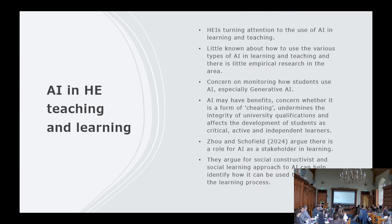HEIs are turning their attention to the use of AI in learning and teaching, but we know very little about it and there's very little empirical research in the area. There's certainly been controversy and concern about the use of AI — something developed for marketing and business, now mainstream through ChatGPT. The current discourse is often around concern about cheating, plagiarism, whether students engage in depth with texts, create their own arguments, and the fear that this undermines the integrity of university qualifications and students' development as critical, active, and independent learners.